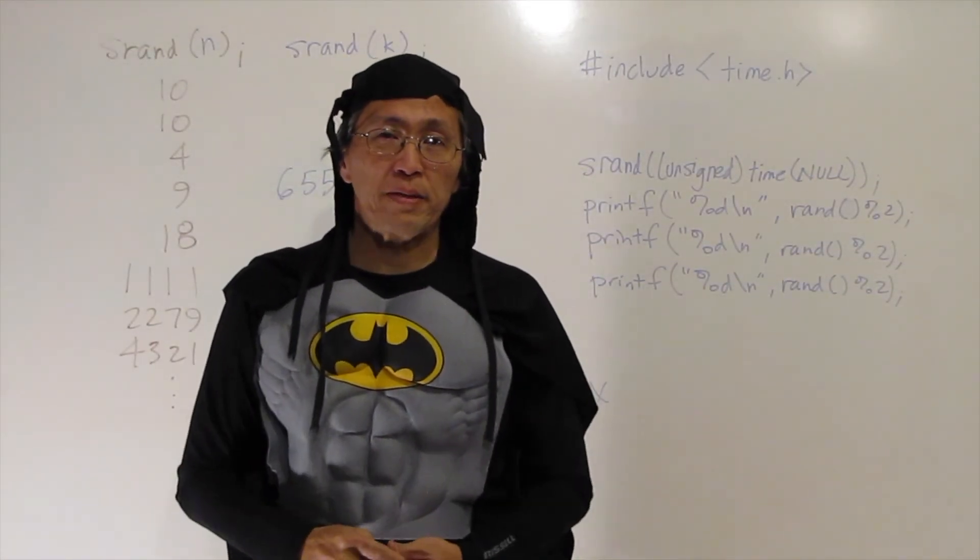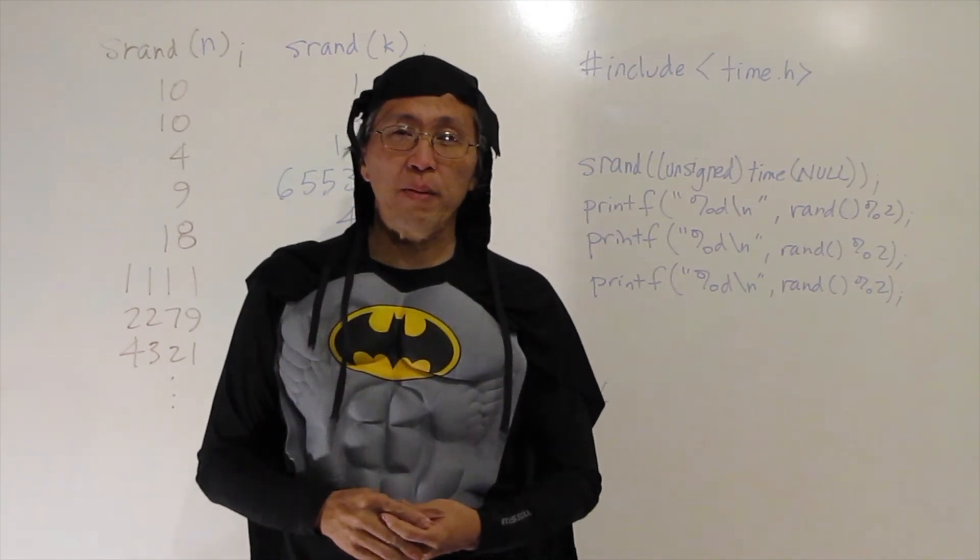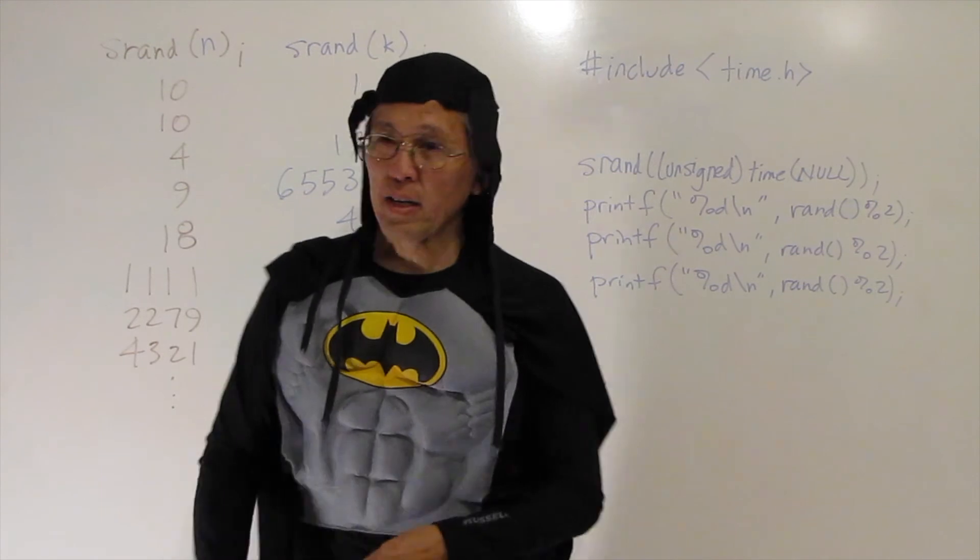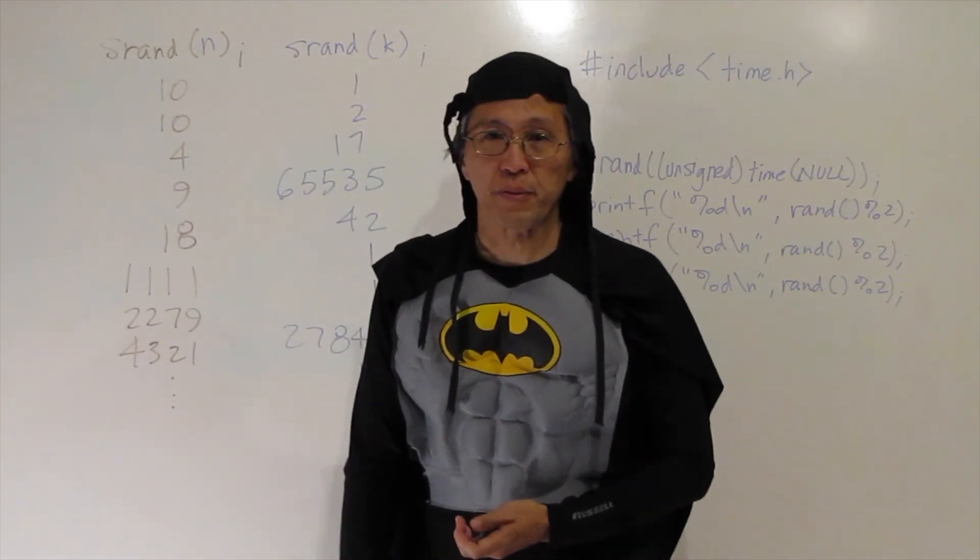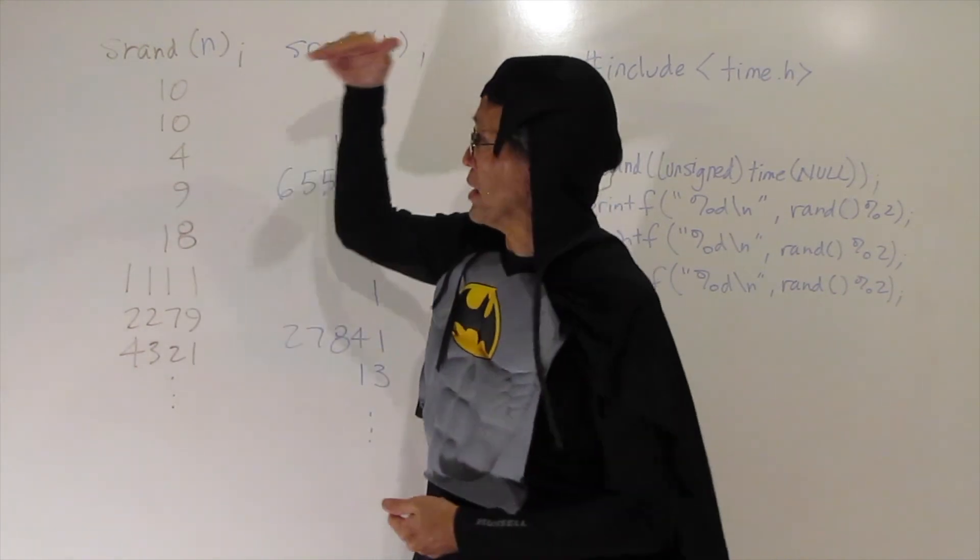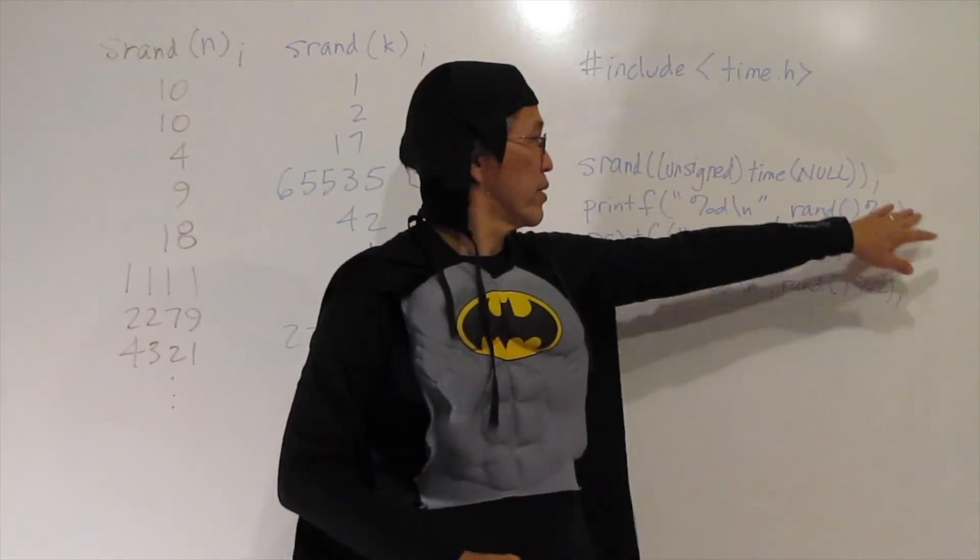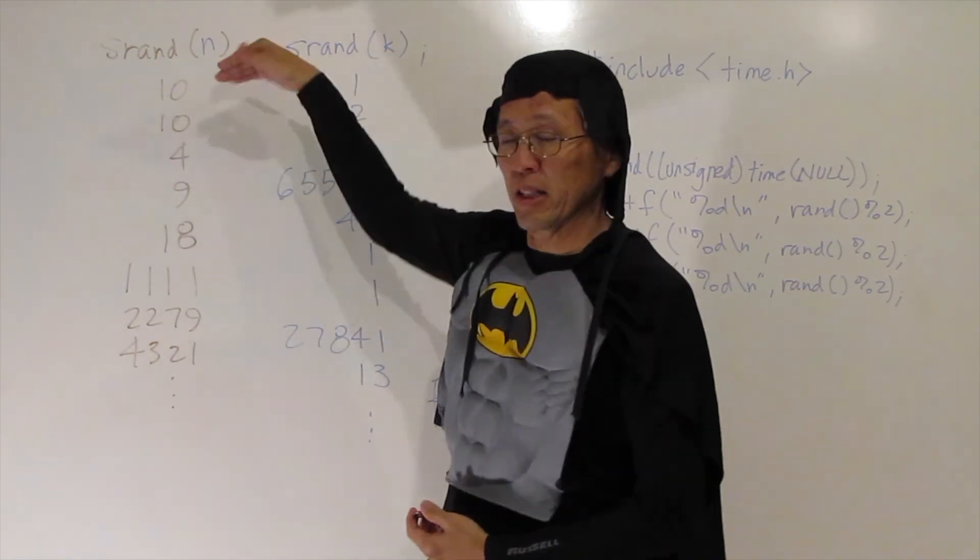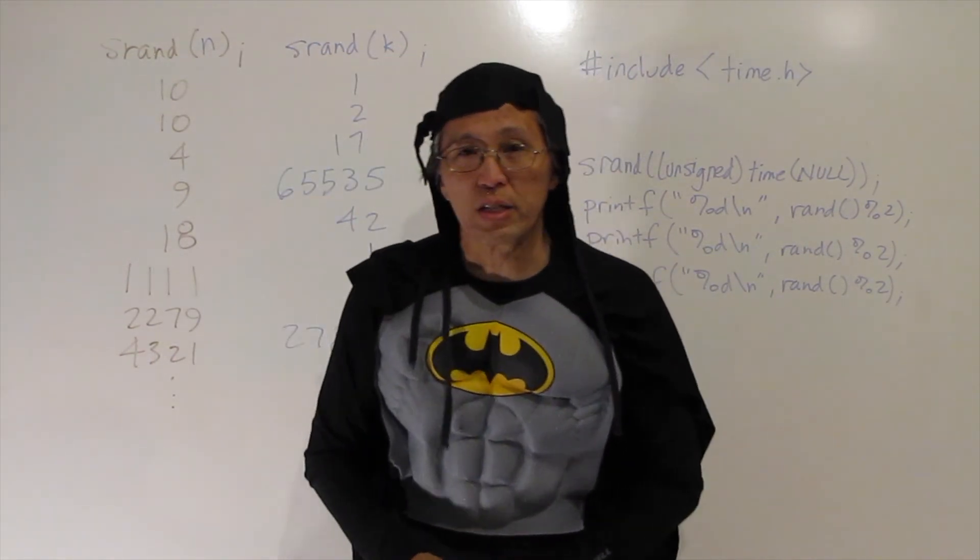Anyway, random numbers. Just kind of remember that a random number sequence is generated, a random list of numbers is generated when you call SRAND. And then every time you call RAND, you get the next number in that list. And the list is your random numbers.